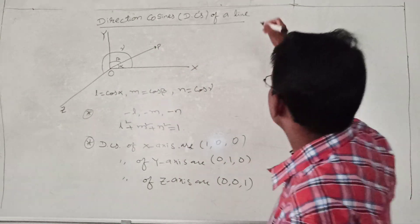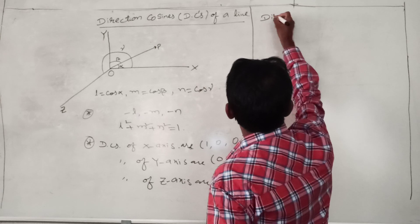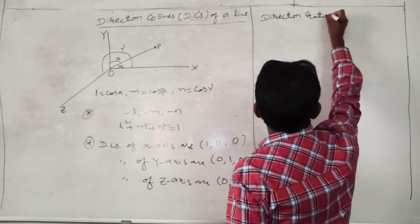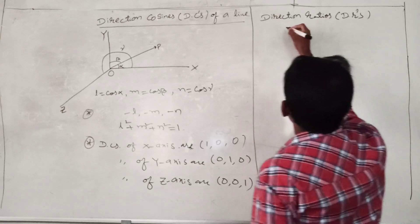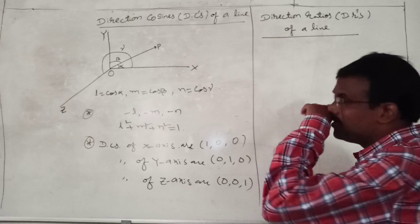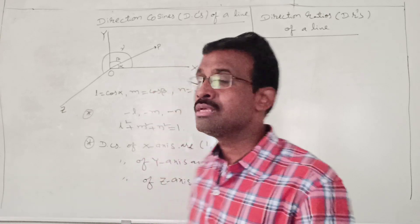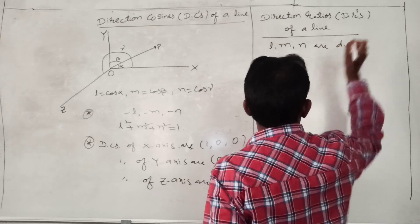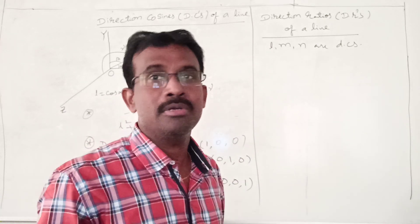That covers the direction cosines concept. Next, let us see the direction ratios concept. Direction ratios of a line — you can call it as DRs. To define direction ratios of a line, first you should know the direction cosines of that line. Let us consider that L, M, N are direction cosines of a line.